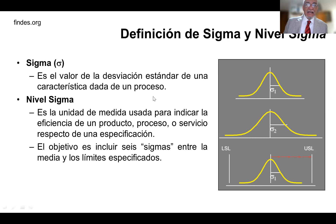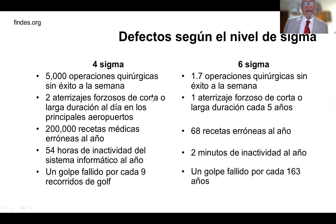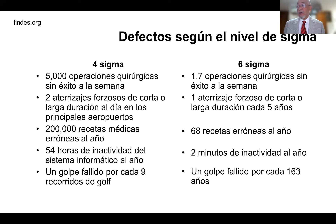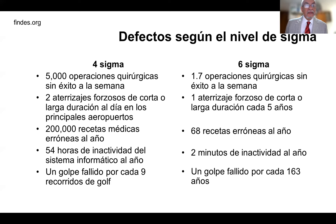Su objetivo es incluir seis sigmas entre la media y los límites especificados. Un proceso con pocos sigmas está poco controlado. Si tenemos cuatro sigmas, equivale a seis mil doscientos diez defectos por millón. Trabajar con cuatro sigmas equivale a cinco mil operaciones quirúrgicas sin éxito a la semana, dos aterrizajes forzosos al día en los principales aeropuertos, doscientos doscientos mil recetas médicas erróneas al año, cincuenta y cuatro horas de inactividad en un sistema informático al año, o un golpe fallido por cada nueve recorridos de golf.